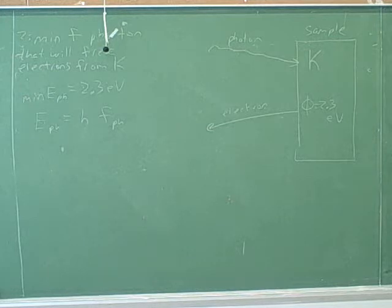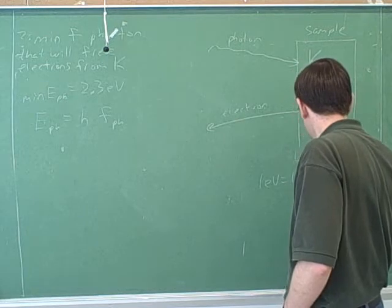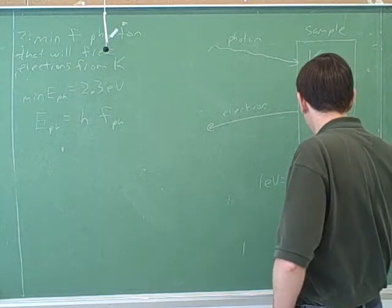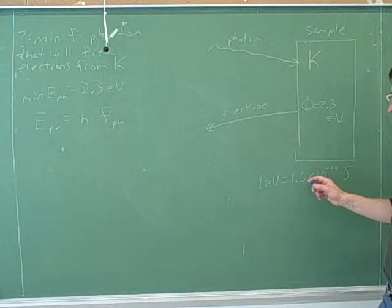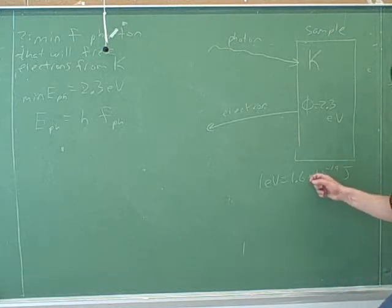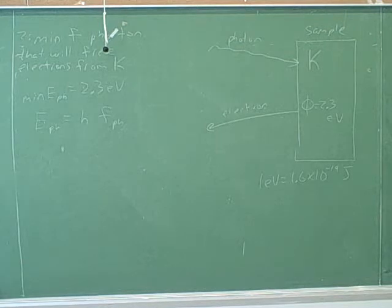You can see it's under energy: one electron volt is 1.6 times 10 to the negative 19 joules. It's no coincidence — if you remember, this is the charge on an electron. It's not hard to explain why this is the same number as the charge on the electron, but we won't spend time on that today. The number here is the same as the charge on the electron, so how would we use that to do the conversion? We would need to convert this to charge.